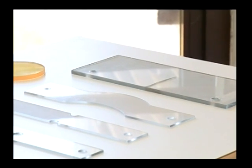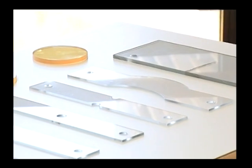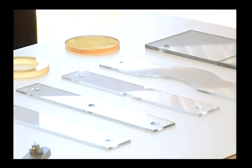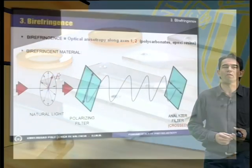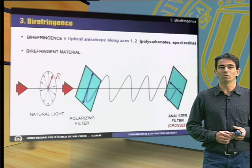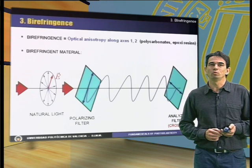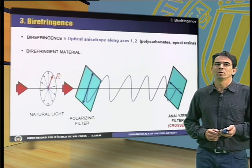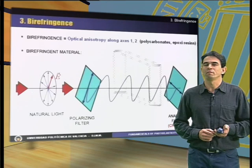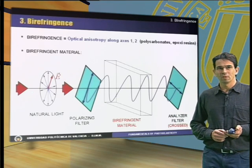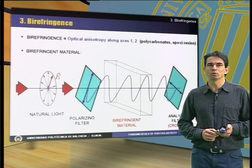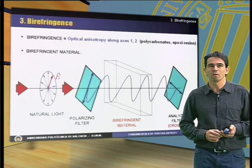In other words, they are birefringent materials. These materials have the property of changing the direction of the polarized light depending on the applied stresses. Let's place a birefringent material between the two filters across the path followed by the ray of light. A birefringent material has two orthogonal optical axes, k1 and k2.